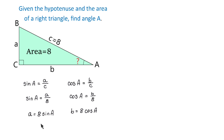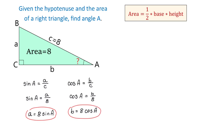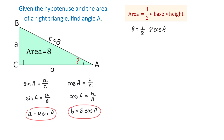So now we have that A is 8 sine of A and B is 8 cosine of A. The formula for the area of a triangle is area equals one-half times base times height. In our triangle, the base is B, which is 8 cosine of A, and the height is A, which is 8 sine of A. We replace the area with 8, the base with 8 cosine of A, and the height with 8 sine of A.